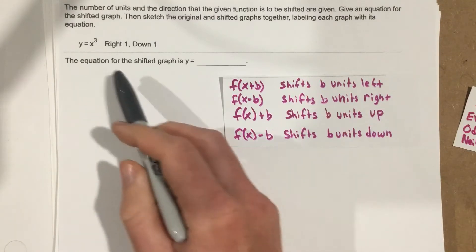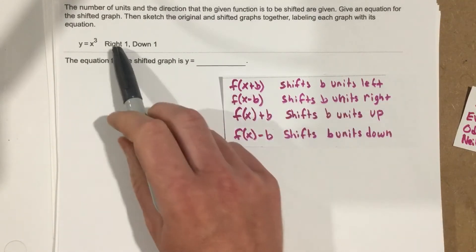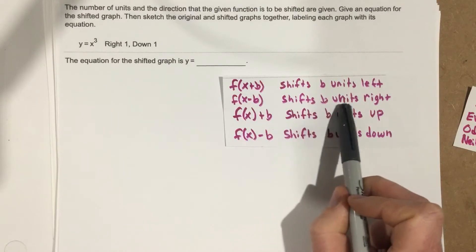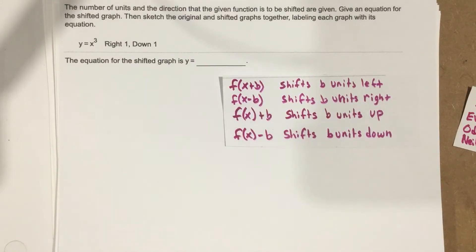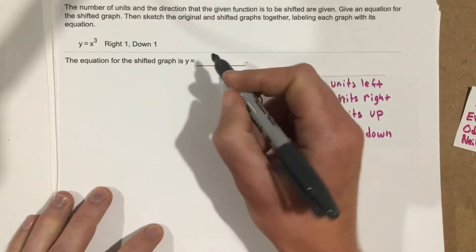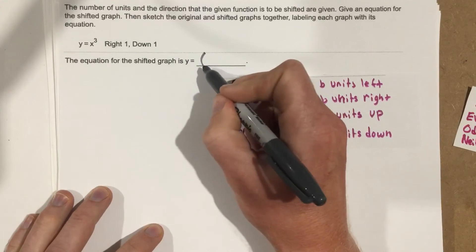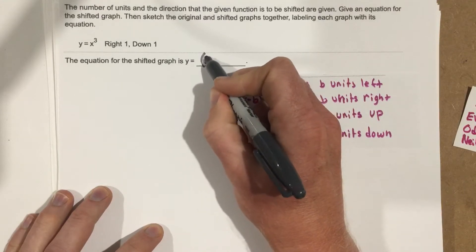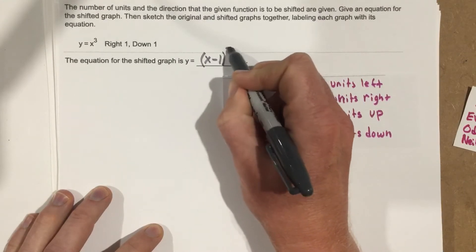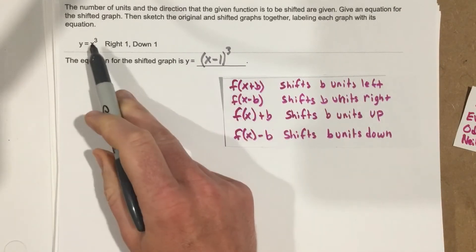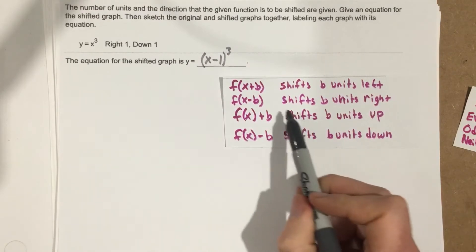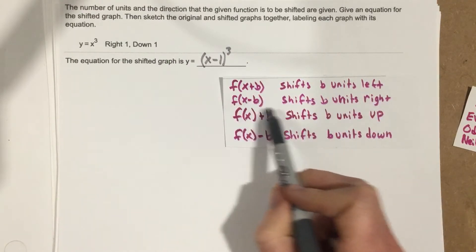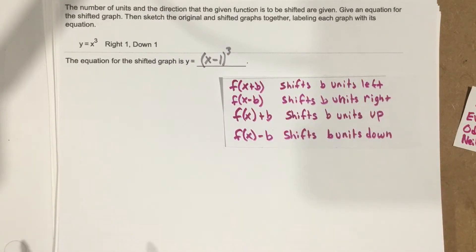To shift right 1, we need to subtract 1 from the x value. So we write y = (x - 1)³. Subtracting 1 from the x value shifts the graph right 1, and that's what this information is telling us.